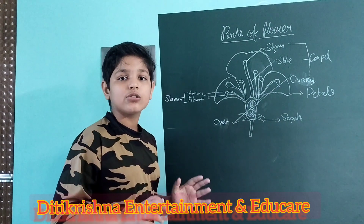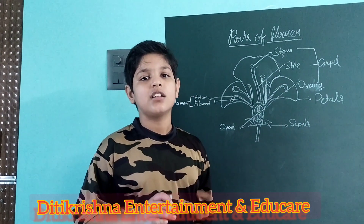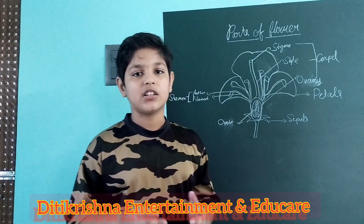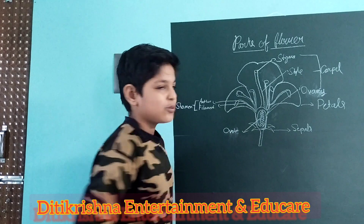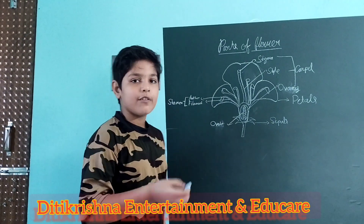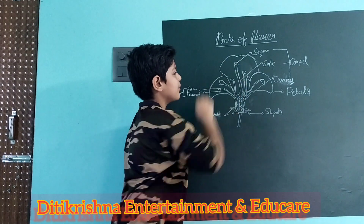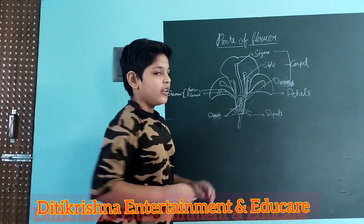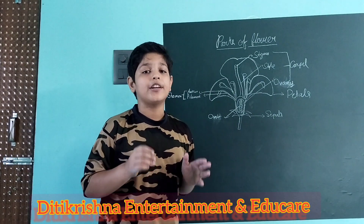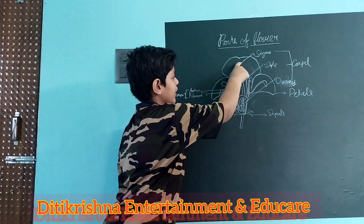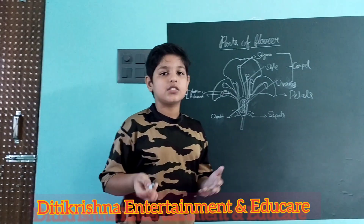So the pollen grains form at the anther. When they land on the stigma, a pollen tube forms, which is a long tube. The pollen tube travels from the stigma down to the ovary. After that, the ovary changes into fruit.